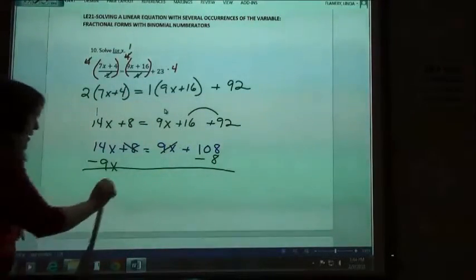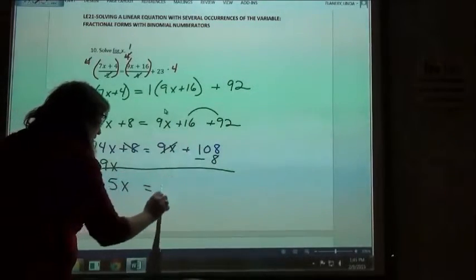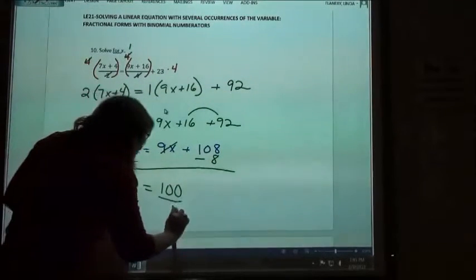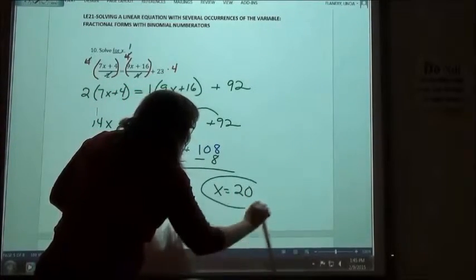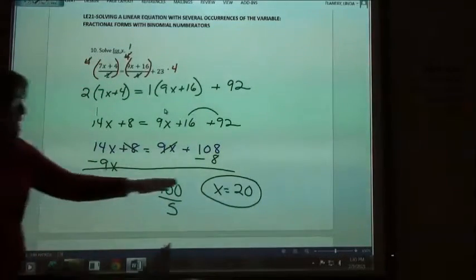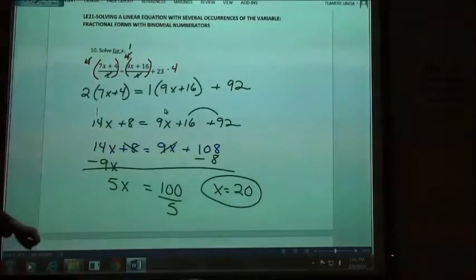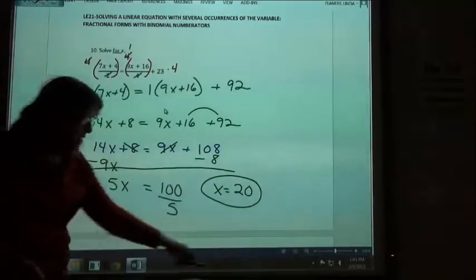14x minus 9x is 5x, 108 minus 8 would be 100. My last step, dividing by that coefficient of 5, so x is going to equal 20. On all of these ones, you should get a nice whole number answer. If it's coming out to a fraction answer, there's probably a mistake somewhere in the problem, go back and check your work. So on this one, we just got x equal 20.